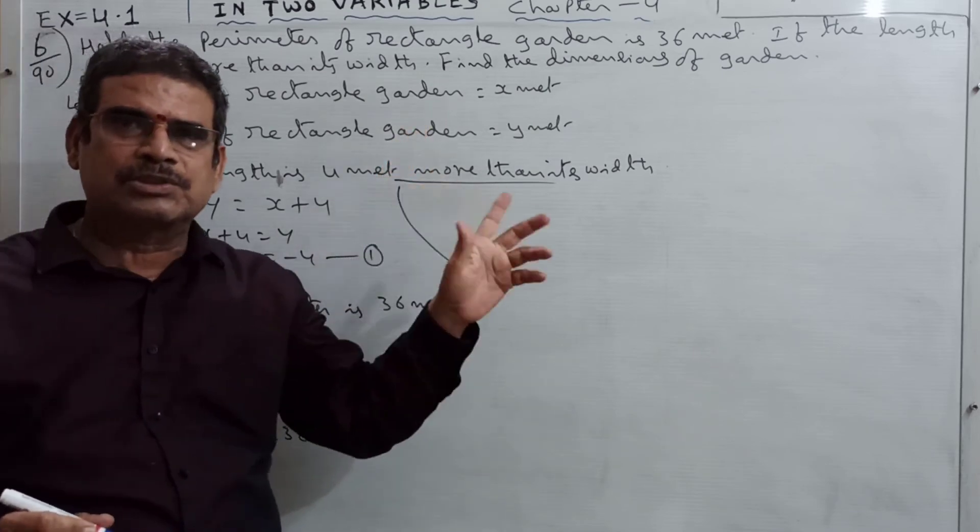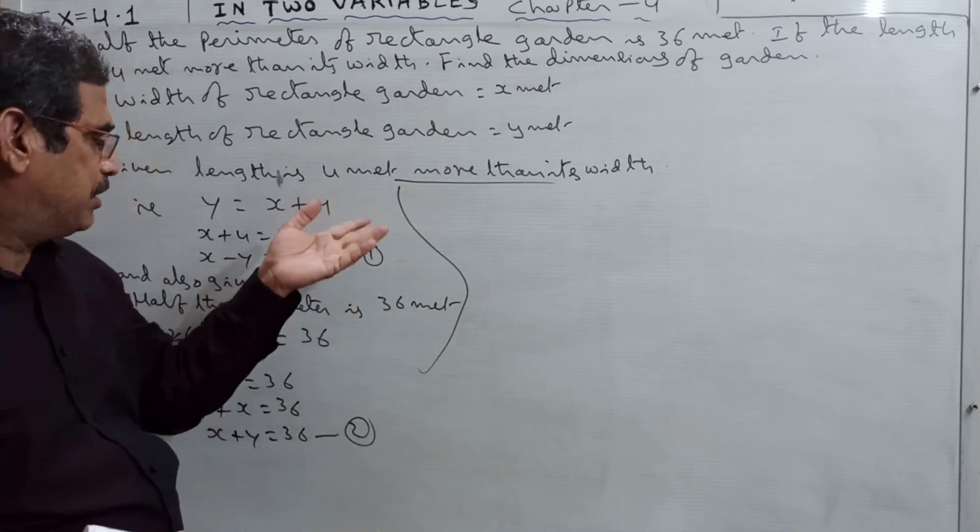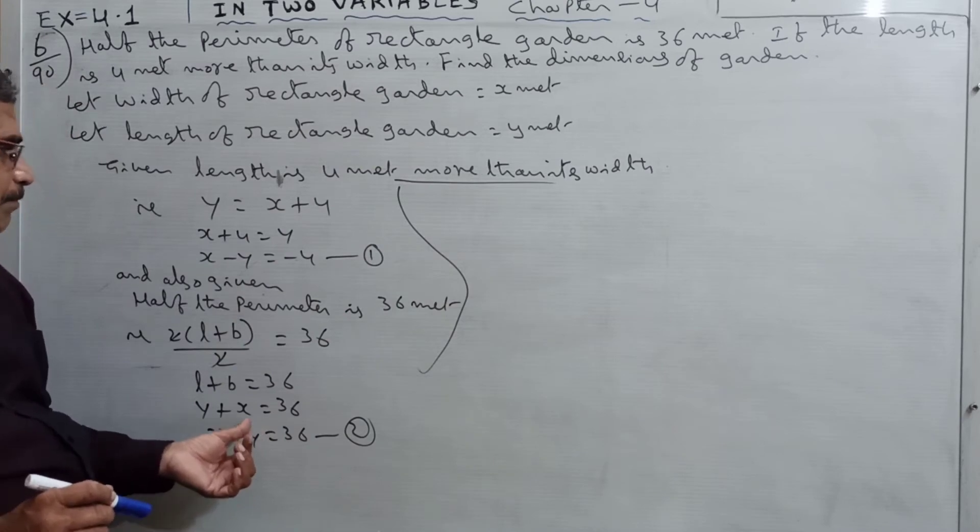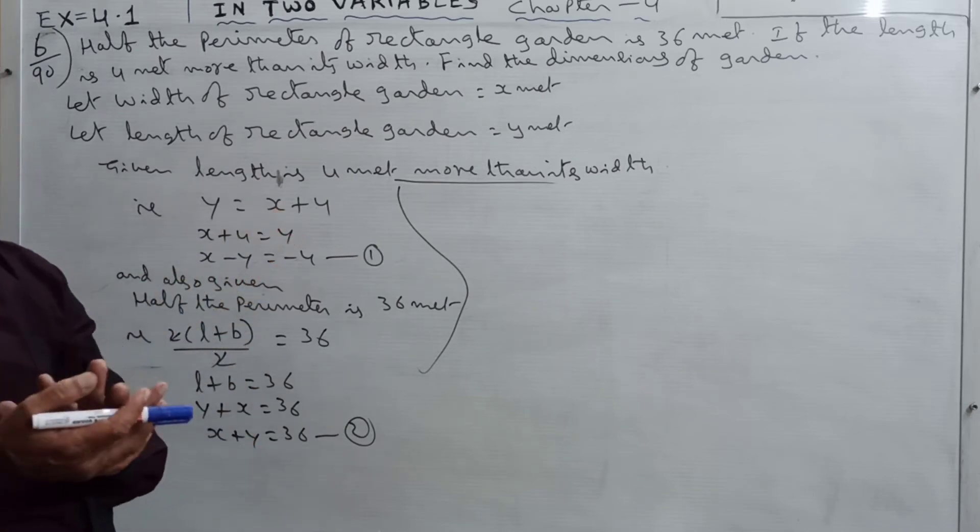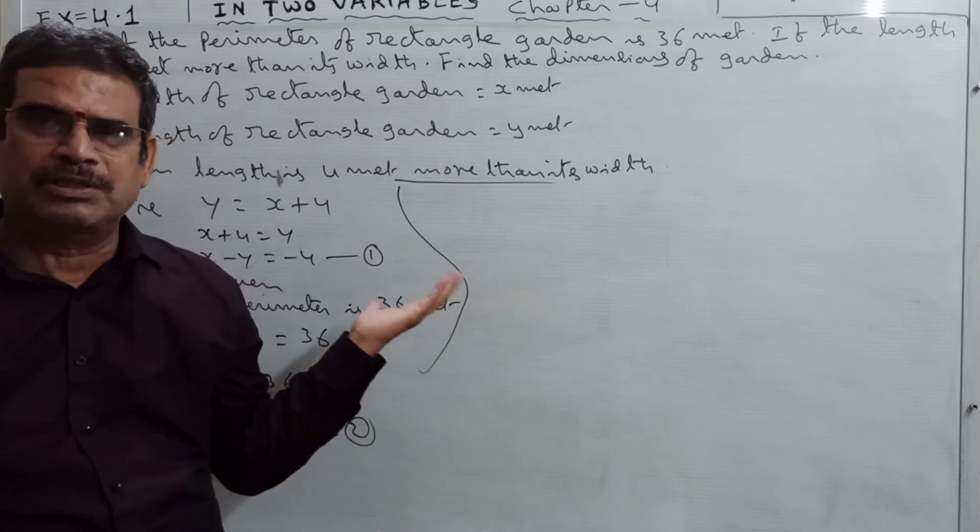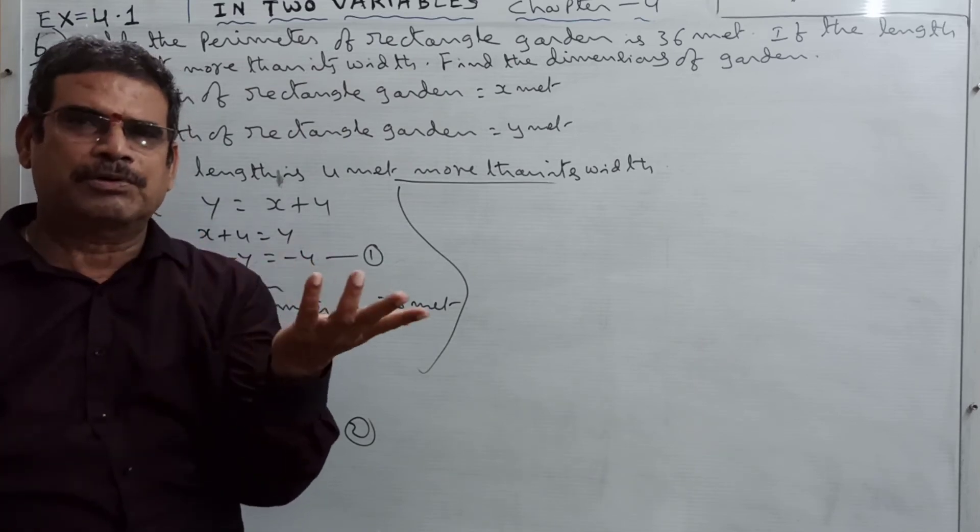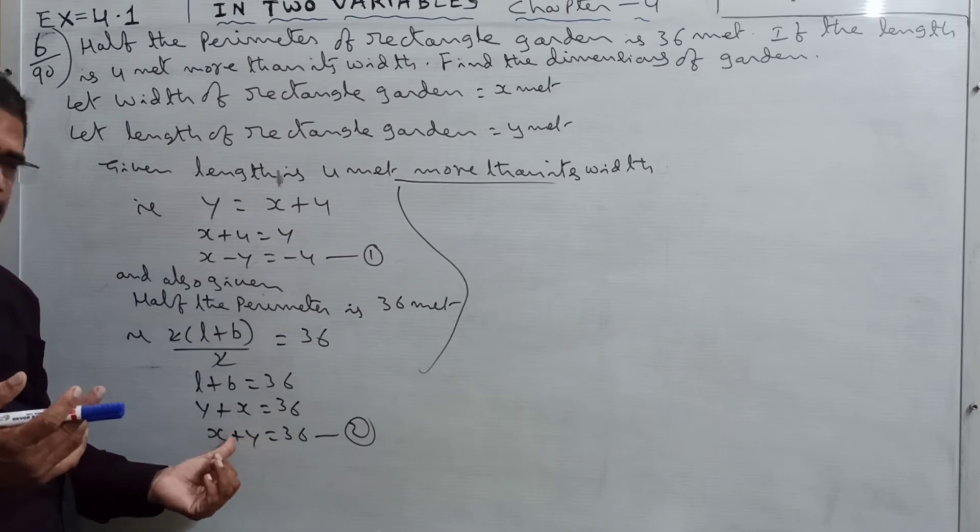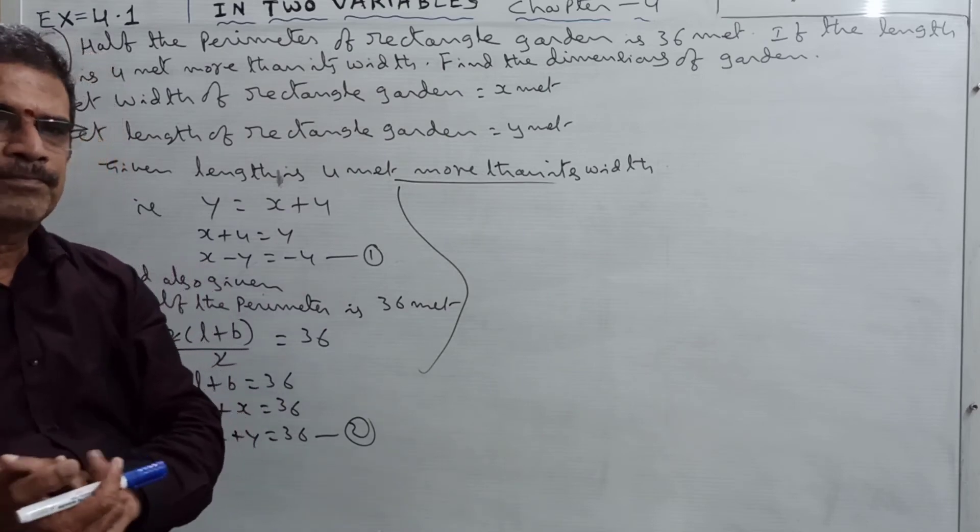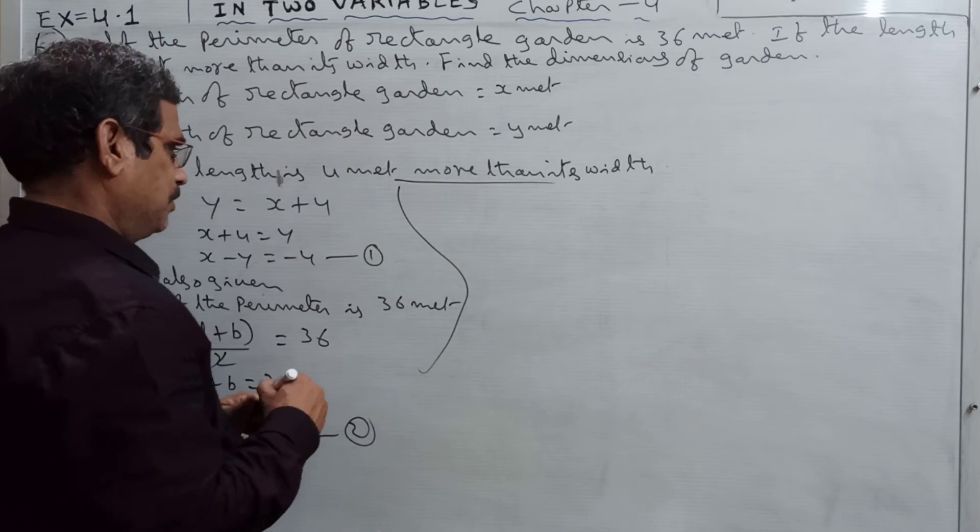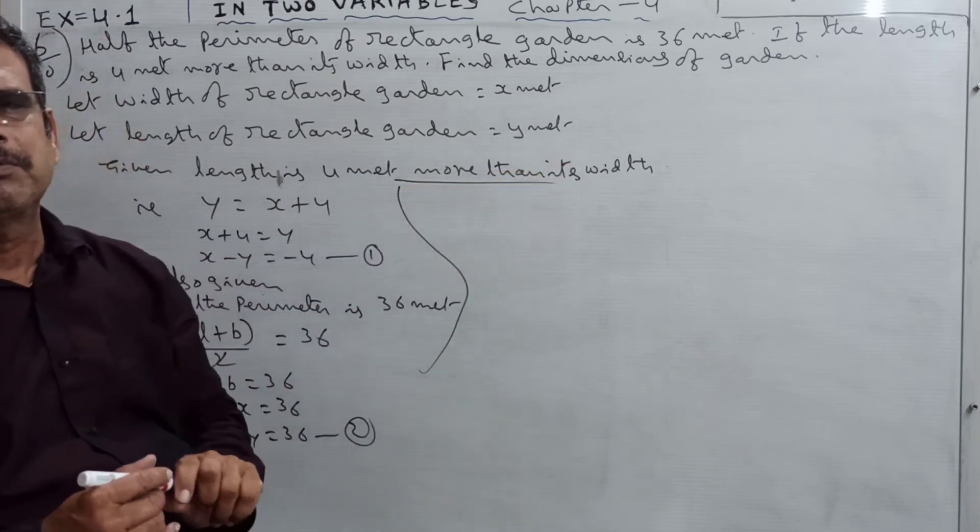The coefficients are equal - y coefficient is 1 here and 1 here, x coefficient is 1 here and 1 here. We can cancel either x or y, both are same. But the signs are different - y is minus here and y is plus here. So what can we do to cancel? We need to change the signs by adding equations 1 and 2.